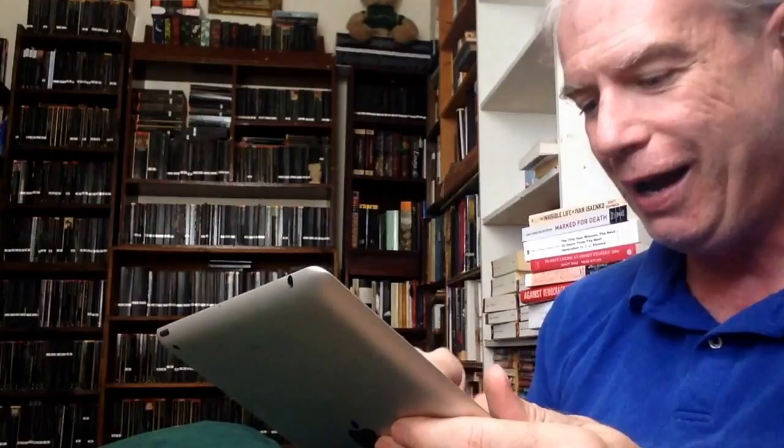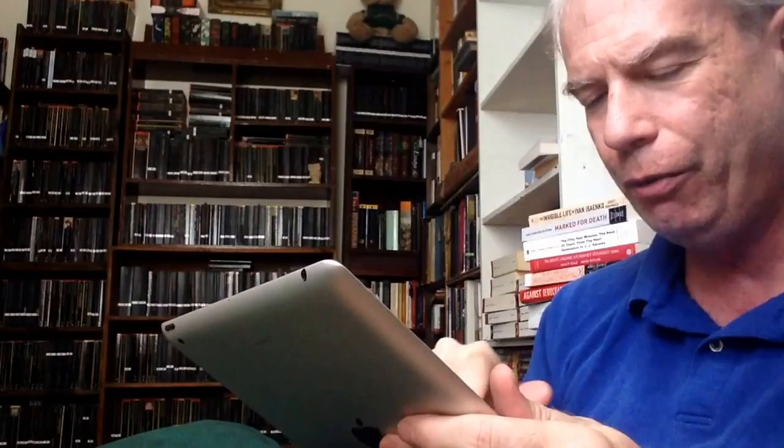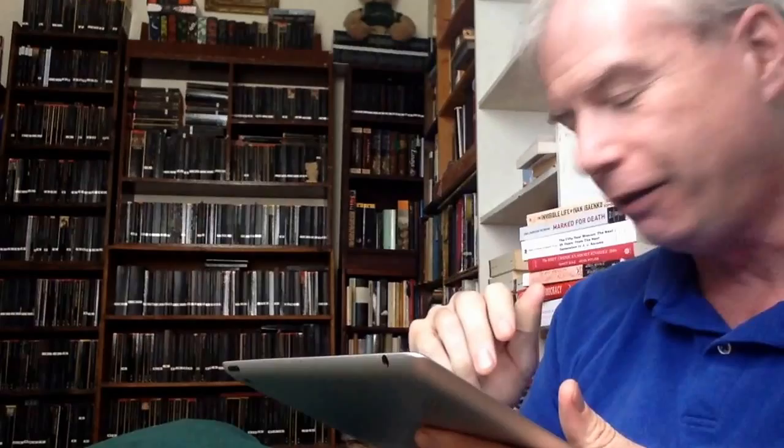But the one I have in mind for today, believe it or not, is YA. It's Tracy Barrett, King of Ithaca. And it's the story of Telemachus, the teenage dreamboat son of Odysseus, who has to live in Ithaca with his mother and all of her brutish suitors while his father is away, first to Troy and then trying to get back home. And it's really well done. I really enjoyed it.